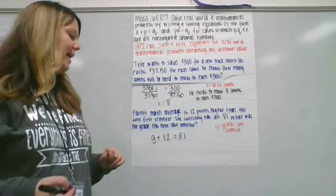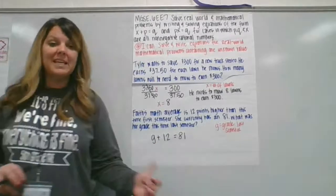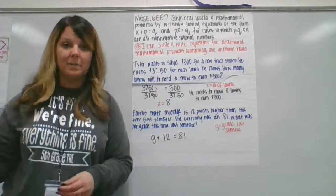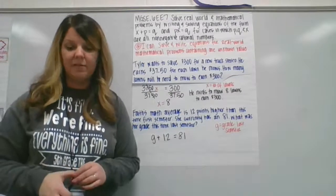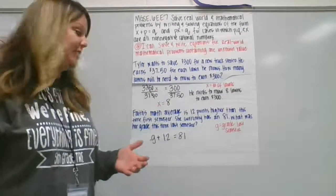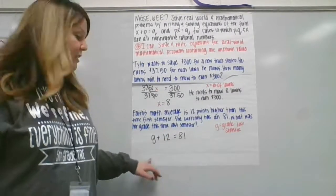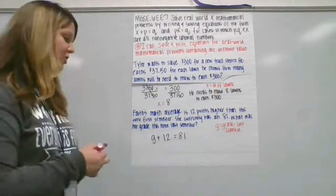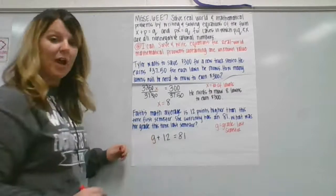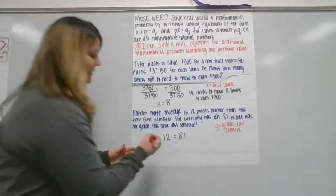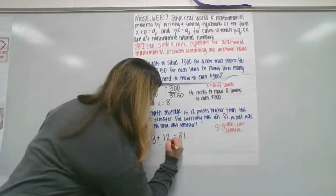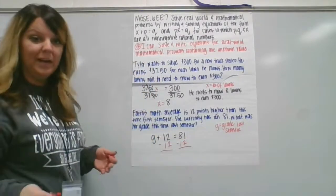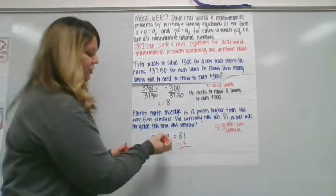So in this case, we have an addition problem, and we're going to use the inverse operation of addition to solve it. The inverse operation of addition is subtraction. So in order to isolate the variable in this case, which is G, we're going to subtract 12 from both sides of the equation. And by doing so, it will give us the value of G.